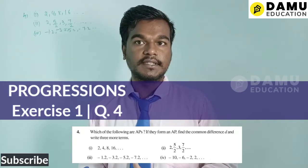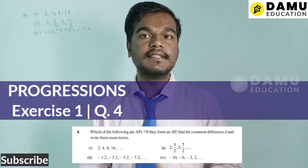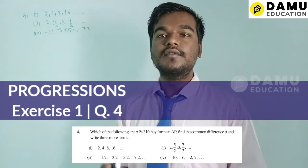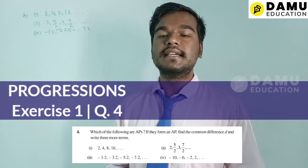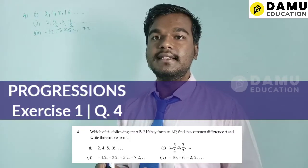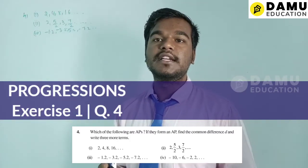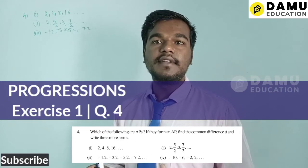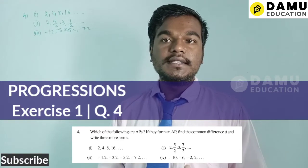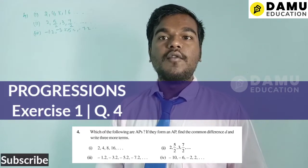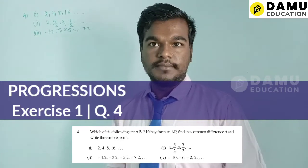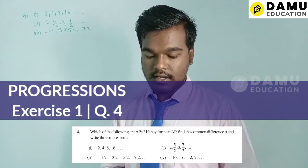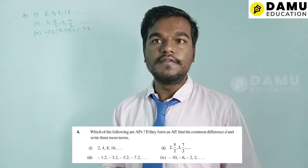If the common difference is the same for all terms, then we can say the given series is in arithmetic progression. After that, we have to find three more terms using the AP formula.